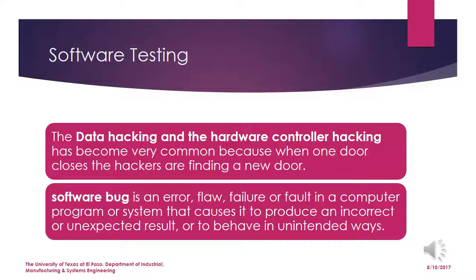The main risks in the software subsystem are data hacking, hardware controller hacking, and software bugs that result in system failure or unauthorized access. Data and hardware control hacking have become very common as hackers continuously find new ways to compromise systems. A software bug is an error, failure, or fault in a computer program that causes incorrect results or unusual behavior.